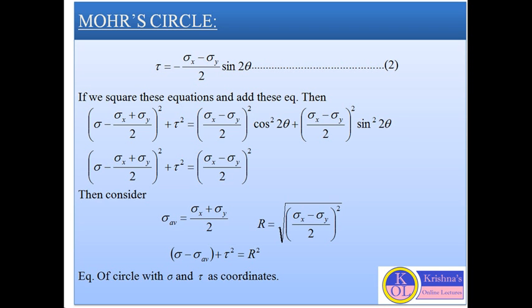These equations are the equations of a circle in parametric form with angle 2θ. If we square and add these equations, the final equation becomes: (sigma − (sigma x + sigma y)/2)² + tau² = ((sigma x − sigma y)/2)². This is the simplification, where considering sigma_average = (sigma x + sigma y)/2 and r = (sigma x − sigma y)/2, we get: (sigma − sigma_average)² + tau² = r². This is the equation of a circle where sigma and tau are the coordinates.